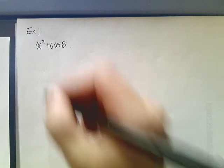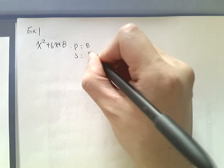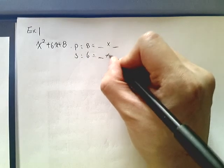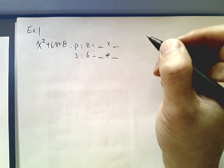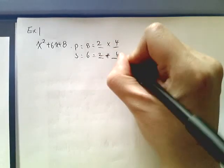So, example 1. We have x-squared plus 6x plus 8. Now, remember, factoring, you need to know, okay? So this one, product and sum, product is 8, sum is 6. So, two numbers, give it to me. Well, hopefully you know this one by now. Can I do this? Yeah? 2 times 4, 2 plus 4.